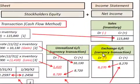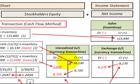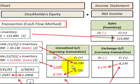In summary: using the fair value method, recognize any currency gains and losses immediately as part of net income. For the cash flow method, accumulate those currency gains and losses as unrealized gains and losses, and then move them over to realized gains and losses only after the settlement date or the delivery date.